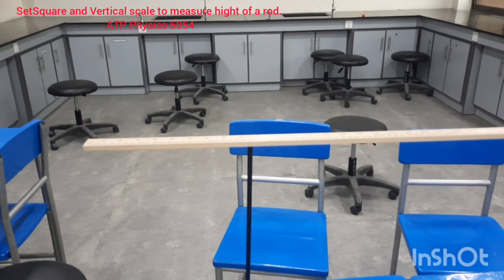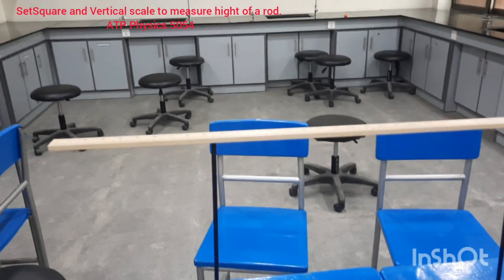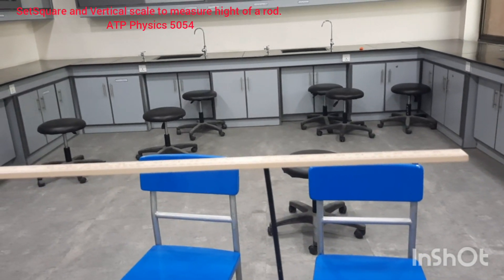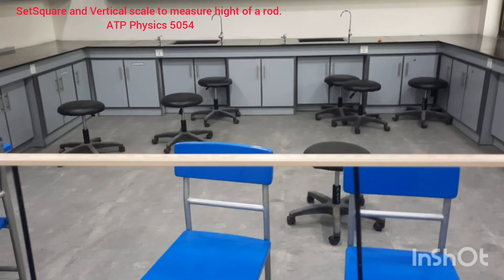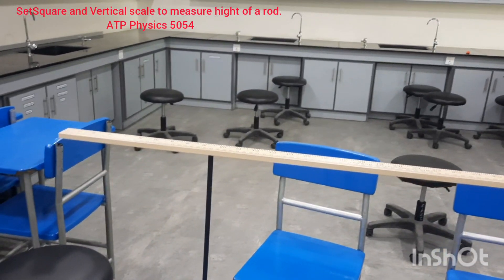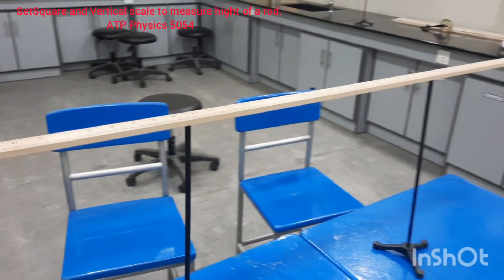In this video, in this session, we are going to learn how to decide that a rod is exactly horizontal or it is not. There are two techniques to decide if the rod is horizontal to the ground or not, and the trick is very simple.